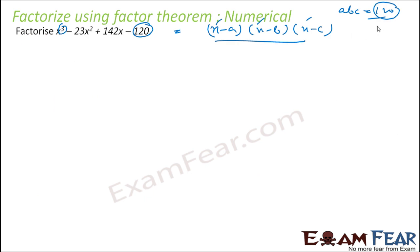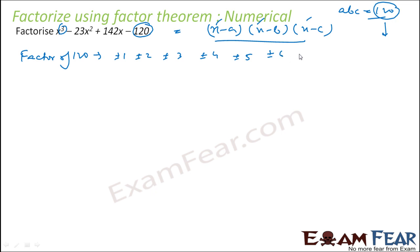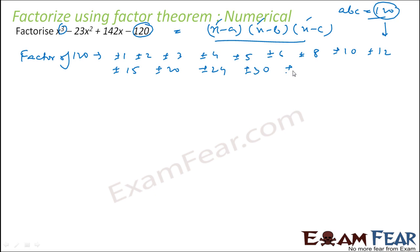Since a·b·c is 120, I have to find the factors of 120. Factors of 120 are plus or minus 1, 2, 3, 4, 5, 6 — 7 is not a factor — 8, 10 — 11 is not a factor — 12 — 13 is not a factor, 14 is not a factor — 15, 16, 17, 18 — 19 not a factor — 20, 21, 22, 23, 24 — 25 is not a factor — 26, 27, 28, 30. These are the possible values of a, b, and c.